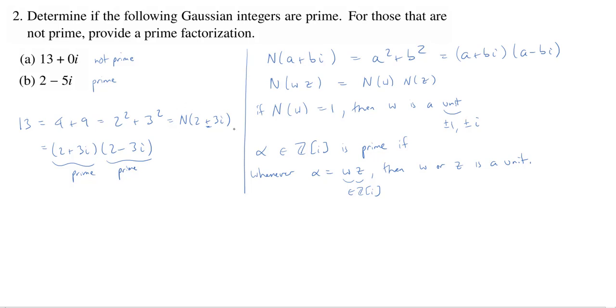Which means the only way to factor the norm, to factor 13, is 13 times 1 if we're dealing with positive integers. If we're trying to factor this, the norm is definitely not going to be 0, so it's definitely going to be a positive integer.